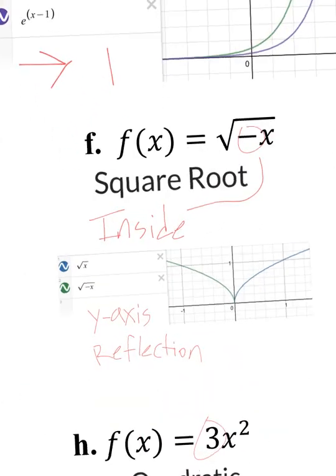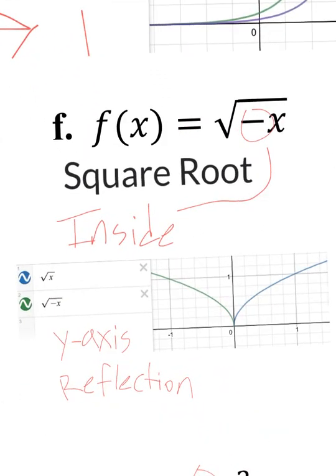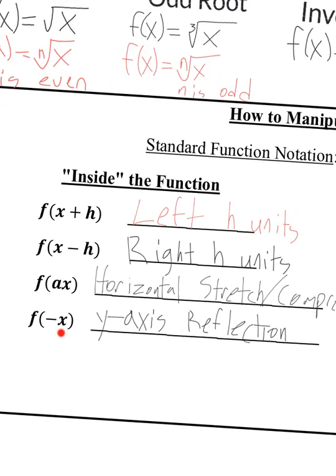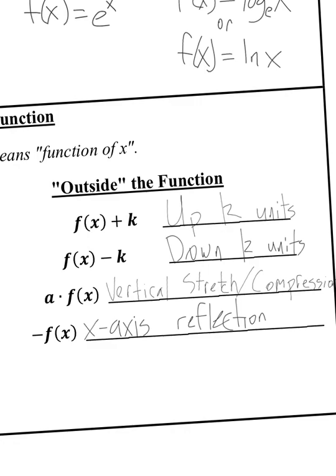F is a square root function because I'm taking the square root of negative x. That negative is underneath the square root, so it's on the inside of the function. When graphed, it used to go right and now it goes left — that's a y-axis reflection. So negatives on the inside of the function are y-axis reflections, and negatives on the outside of the function make an x-axis reflection.